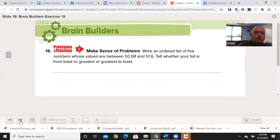All right, let's write an ordered list of five numbers whose values are between 50.98 and 51.6. Tell whether your list is from least to greatest or greatest to least. Go ahead and try it and then I will model a possible answer. Welcome back. 50.99, which is greater than 50.98, 51, 51.05, 51.1, 51.4. And as you were doing this you went from least to greatest. If you went 51.59 down to 51.01, you would have been going the opposite way.